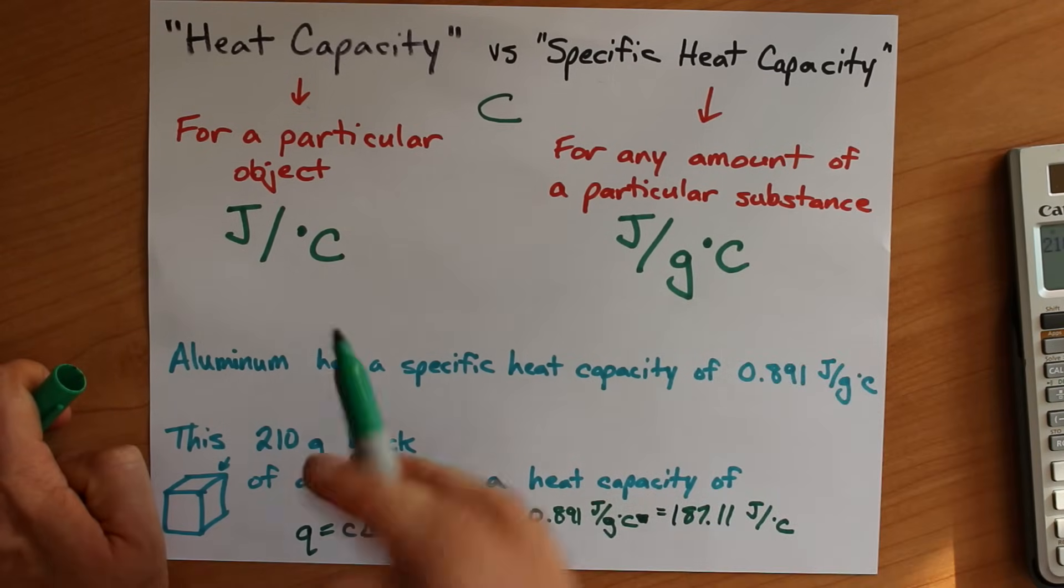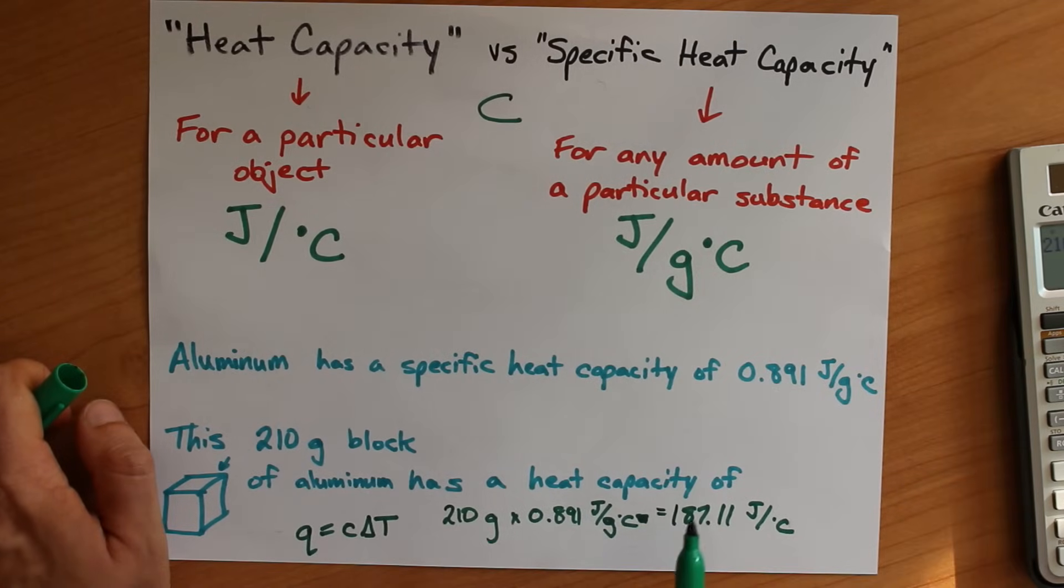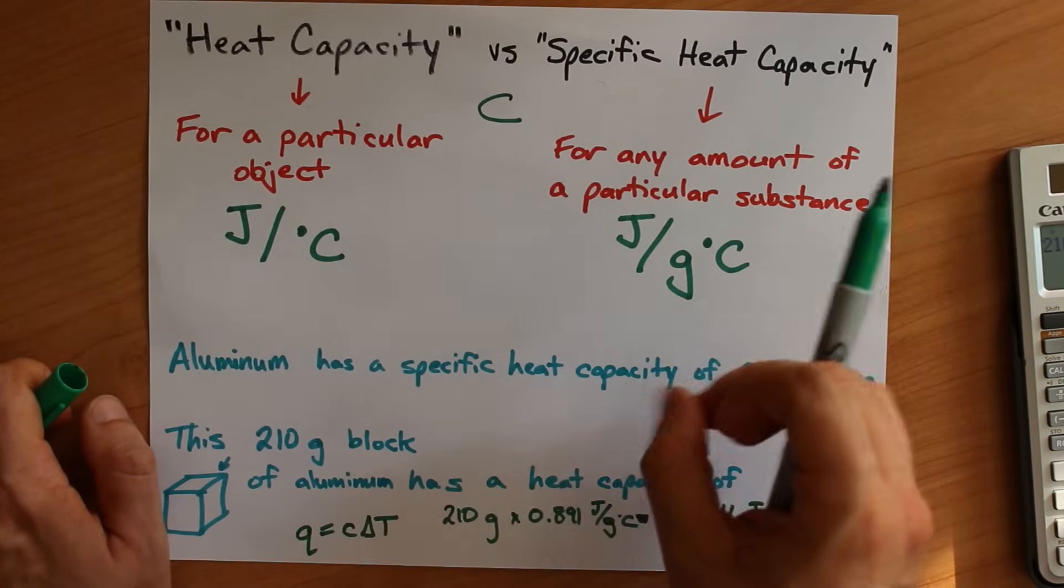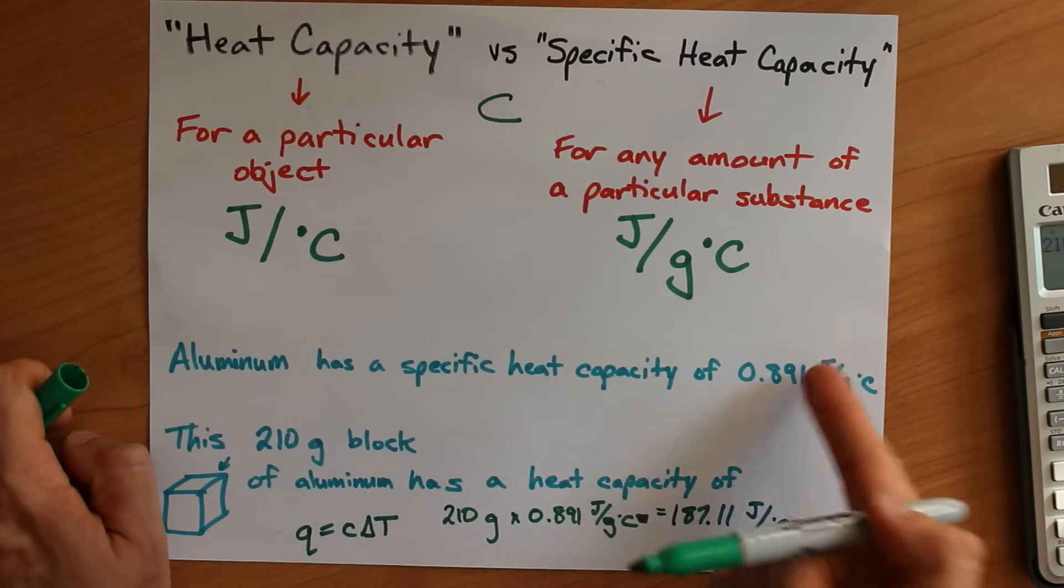If you have a different block, maybe it's only 209 grams, the heat capacity is going to have changed, even though the specific heat capacity of aluminum is always the same.